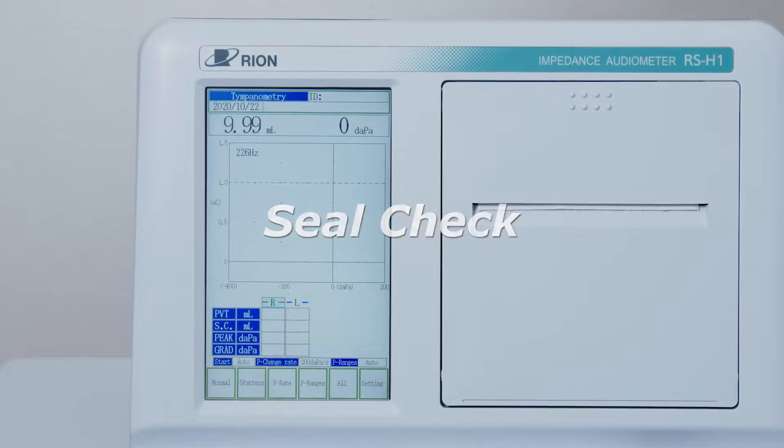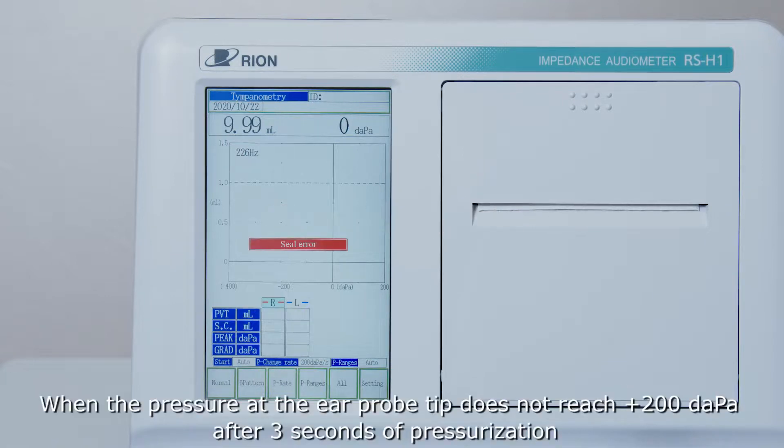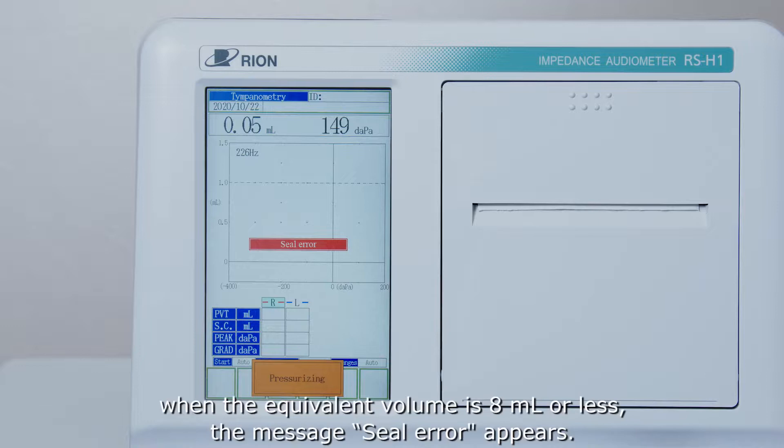Seal check. When the pressure at the ear probe tip does not reach plus 200 decapascals after 3 seconds of pressurization, when the equivalent volume is 8 milliliters or less, the message seal error appears.